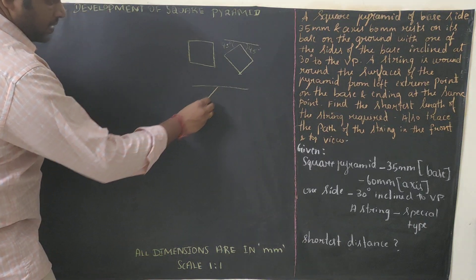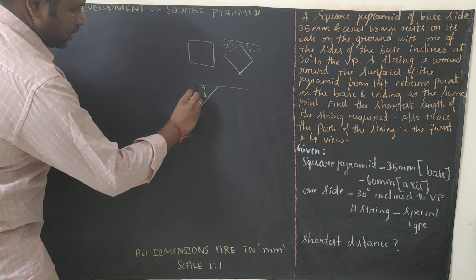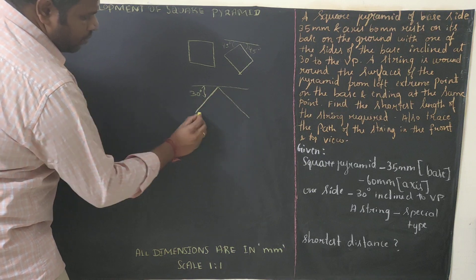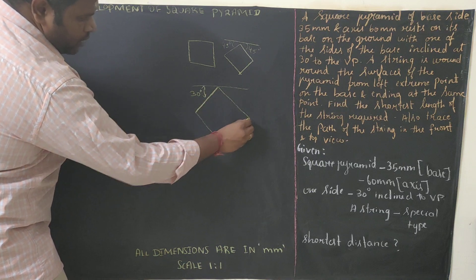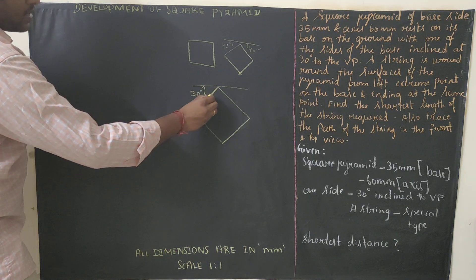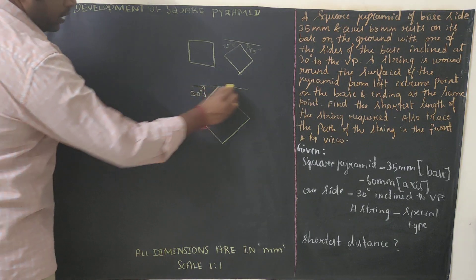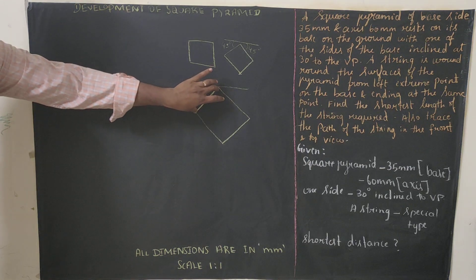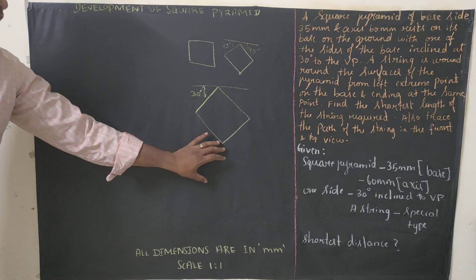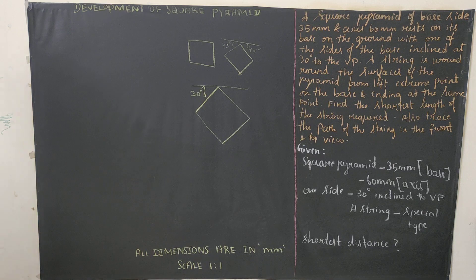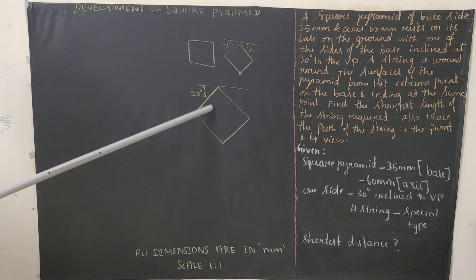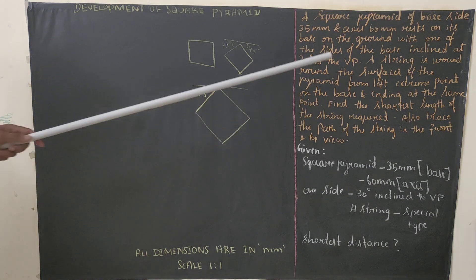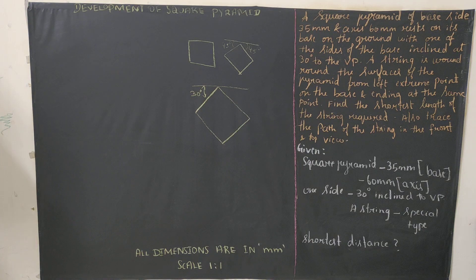One side is inclined at 30 degrees. Draw a reference line parallel to XY, then draw a side at 30 degrees of length 35mm. From each end draw 90-degree lines of 35mm and join them to form the square. The angle is 30 degrees — it's not 45 degrees equal inclined. Keep that in mind.